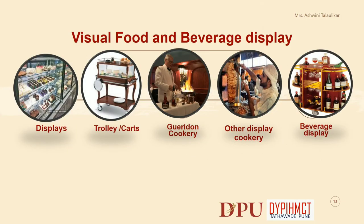We shall now study the Visual Food and Beverage Display. The following are the various Visual Food and Beverage Displays: Displays, Open Displays, Trolleys and Cards, Gueridon Cookery, Other Display Cookery, and Beverage Display. We shall understand the role and examples of each.